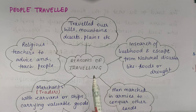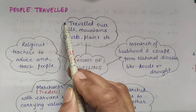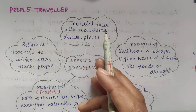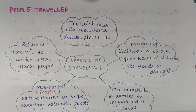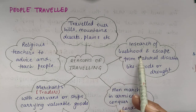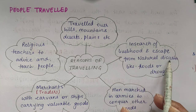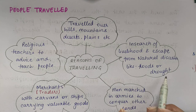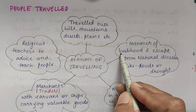So, reasons for travelling — there are five reasons. First, they travelled over hills, mountains, deserts and plains, crossing large distances to move from one place to another. Now why were they doing this? In search of livelihood and to escape from natural disaster. Basically they were searching for livelihood — occupation dhoon rahe the, employment dhoon rahe the.